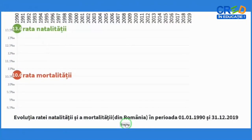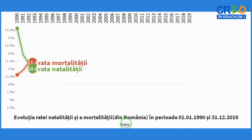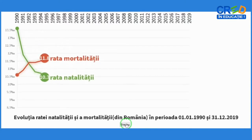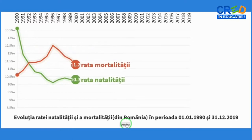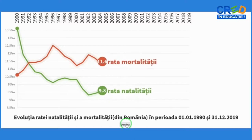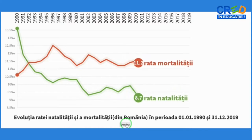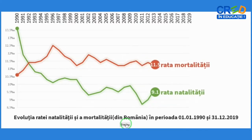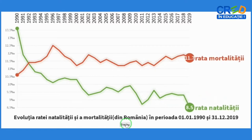Rata natalității depășea cu aproximativ 3 promile rata mortalității în 1990. Rata mortalității a crescut, în timp ce rata natalității a ajuns la un minim istoric de 8,5 promile în 2019.